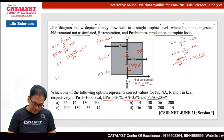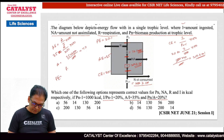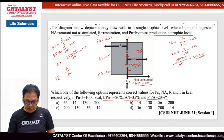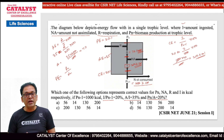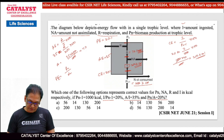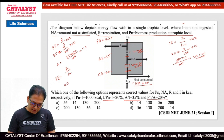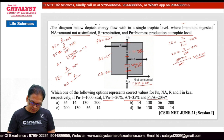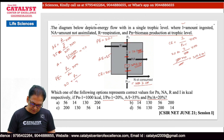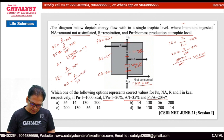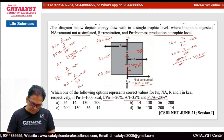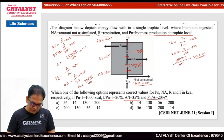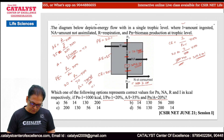Now we calculate PN. Production efficiency is PN upon AN into 100. The value of A is 70 kilocalories and production efficiency is 20%. So: 20 = PN / 70 × 100, giving PN = 70 × 20 / 100 = 14 kilocalories.